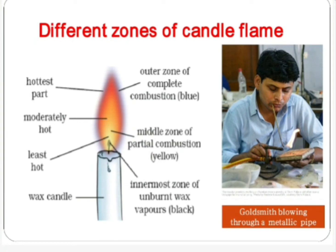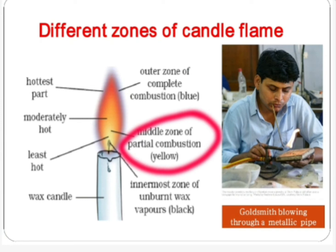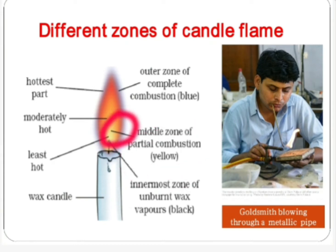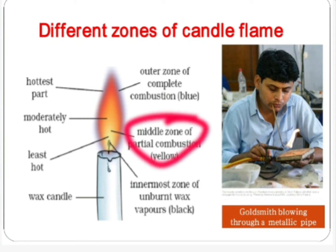Second, the middle zone. In this zone the candle flame is yellow in color. It is the biggest zone of the candle flame. This zone does not get enough supply of oxygen and hence it undergoes incomplete combustion, due to which the particles of gas burn with a yellow flame. The heat energy produced in this zone is less as compared to the outermost zone.